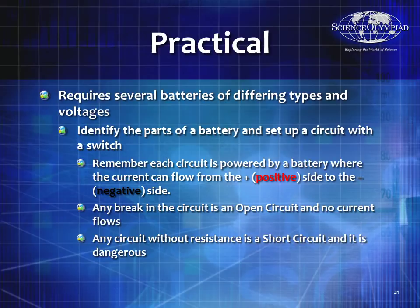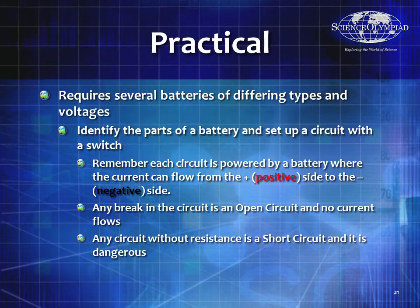Pause and get several batteries of different types and voltages. Identify the different parts of the battery and set up a circuit with a switch. The circuit is powered by a battery where current flows from the positive side to the negative side. If there's a break in the circuit, it's called an open circuit and current can't flow. However, if you connect the positive to the negative side without any resistance, it's called a short circuit — that's quite dangerous and will drain your batteries or start a fire.